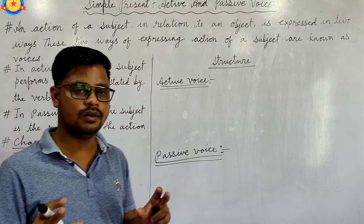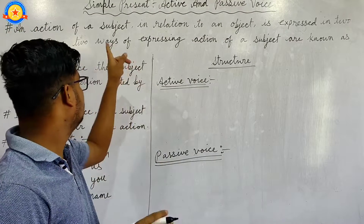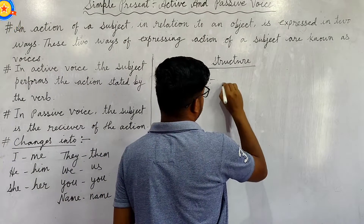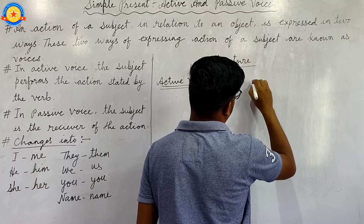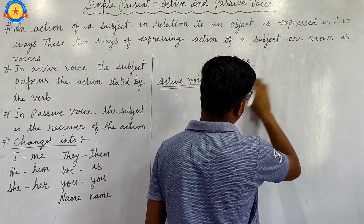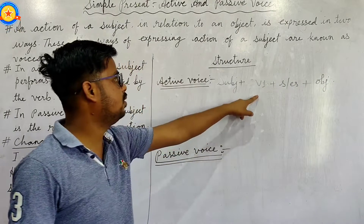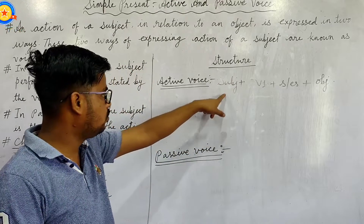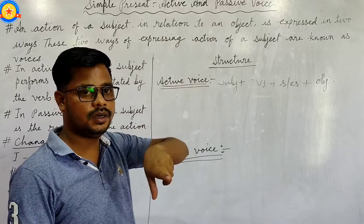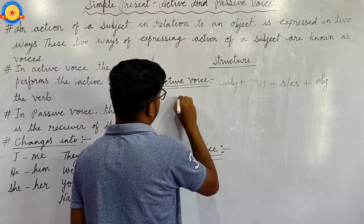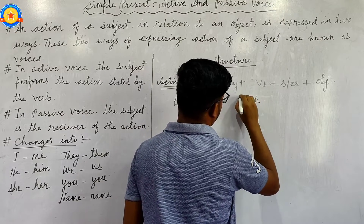The structure for active voice is the same as an affirmative or positive sentence in simple present tense. Its formula is: Subject + Verb (1st form) + s/es + Object. For example: 'He reads a book.' Here, 'he' is the subject, 'reads' is the verb, and 'a book' is the object.